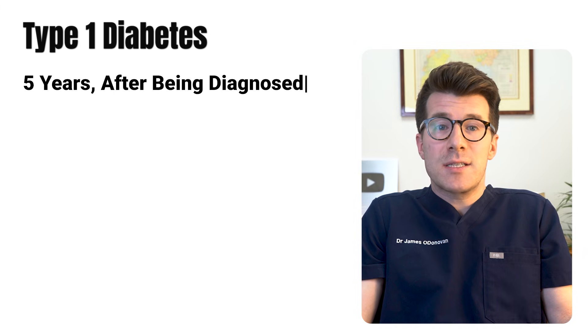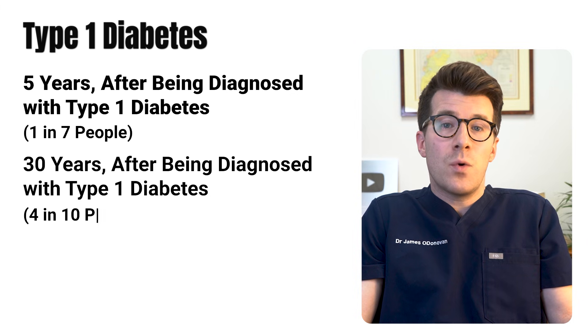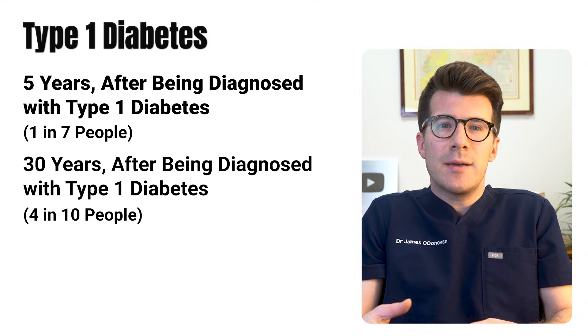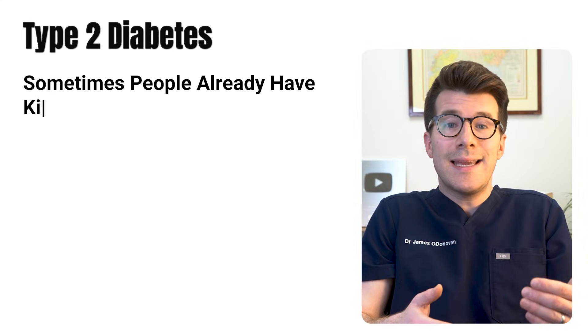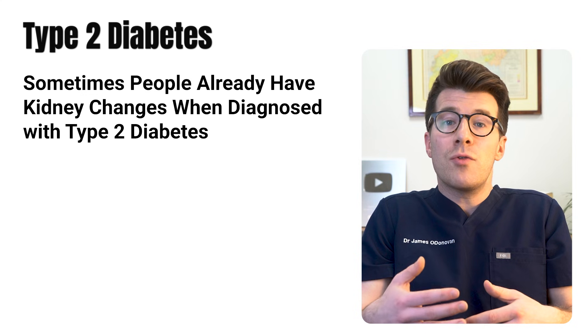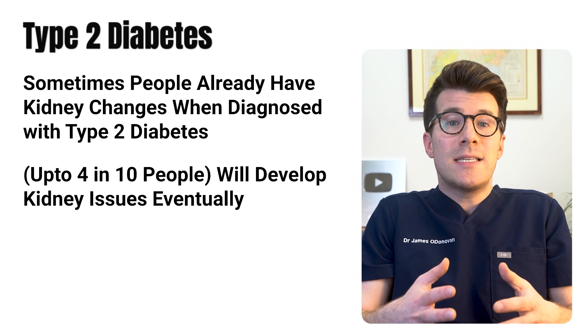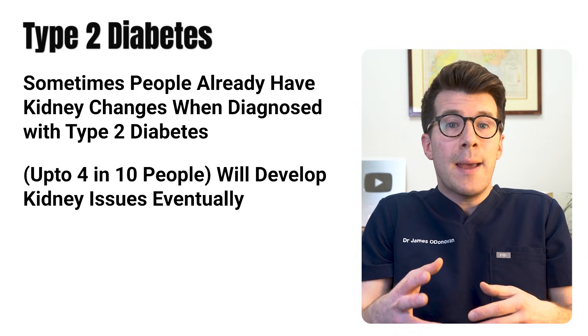In type 1 diabetes, signs of kidney problems usually show up years down the road. Around five years after diagnosis, about 1 in 7 people have early kidney changes; after 30 years that could be closer to 4 in 10, and a smaller percentage end up needing dialysis. Type 2 diabetes makes up the majority of cases, and sometimes people already have some kidney changes at first diagnosis because they've had high blood sugar for a while without realizing it. Up to 4 in 10 people with type 2 diabetes will develop kidney issues eventually, and a portion may need dialysis.